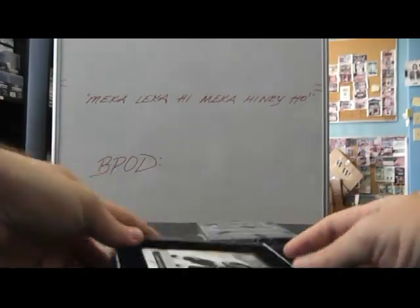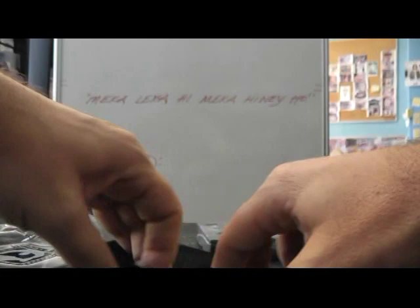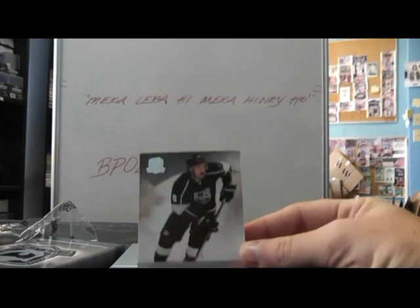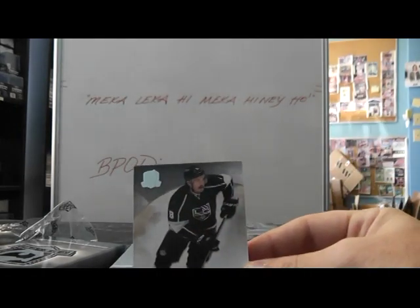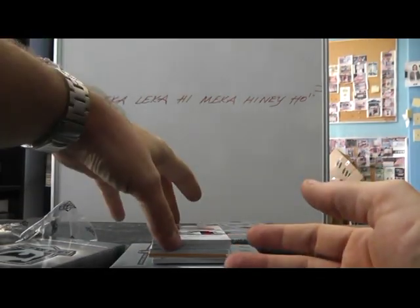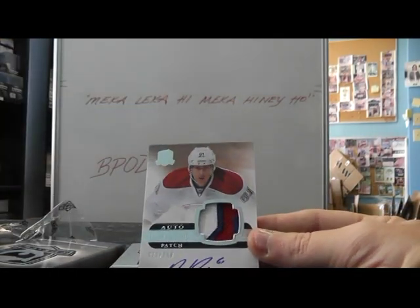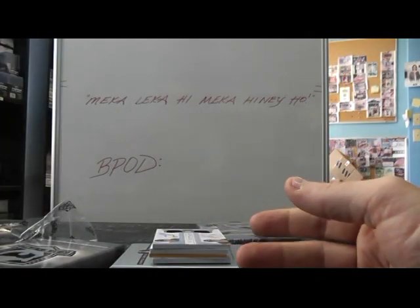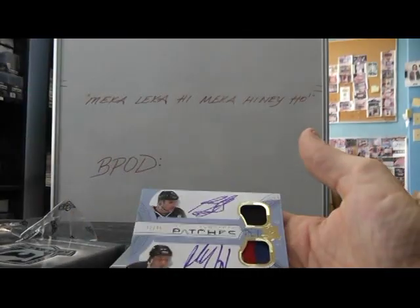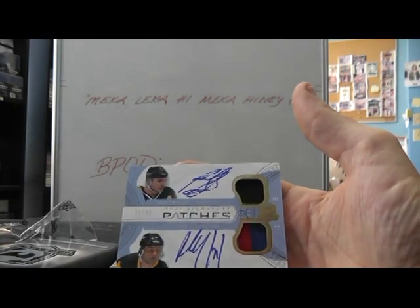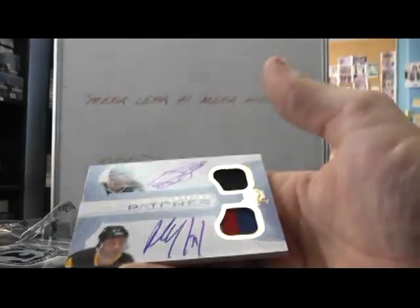Round five. Drew Doughty, numbered to 249, for the Kings — base card. Rafael Diaz, 249, Canadiens — he just signs 'RR'. We have a dual patch, dual autograph to 35 — Ron Francis and Paul Coffey — Penguins. Penguins, dual patch, dual autograph.